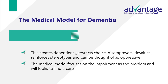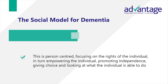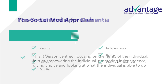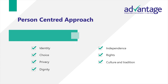The medical model creates dependency, restricts choice, disempowers, devalues, reinforces stereotypes, and can be thought of as oppressive. It focuses on the impairment as the problem and looks to find a cure. The social model of dementia is different — it is person-centred, focusing on the rights of the individual and in turn empowering the individual, promoting independence, giving choice and looking at what the individual is able to do. The key is to take a person-centred approach.